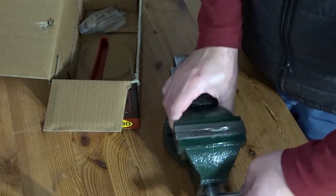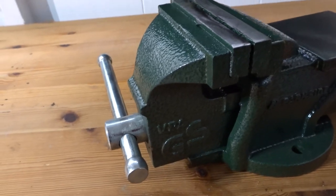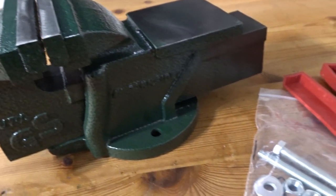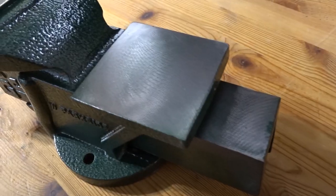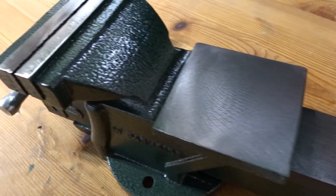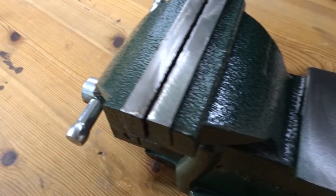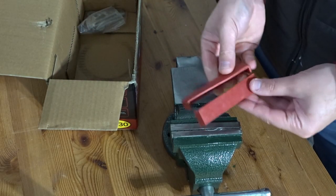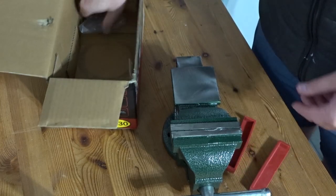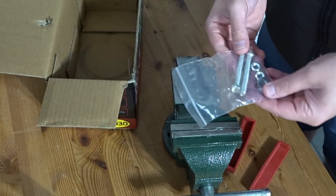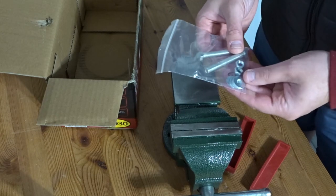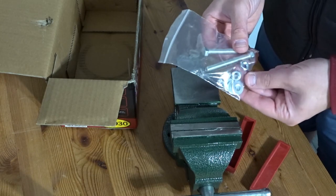So here's the vise and we have the two rubber jaws. And then a bag with two bolts and four washers and two nuts.